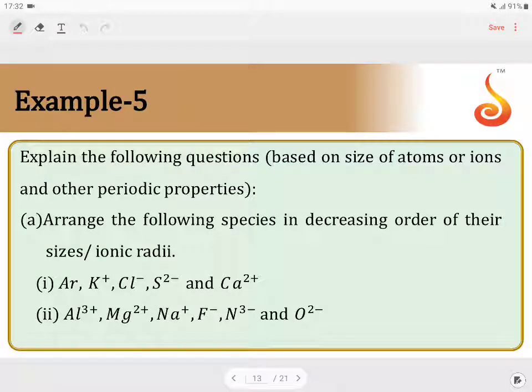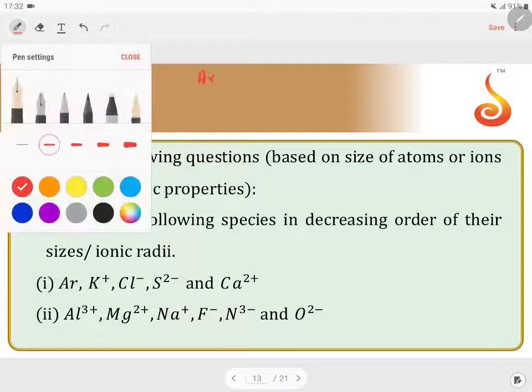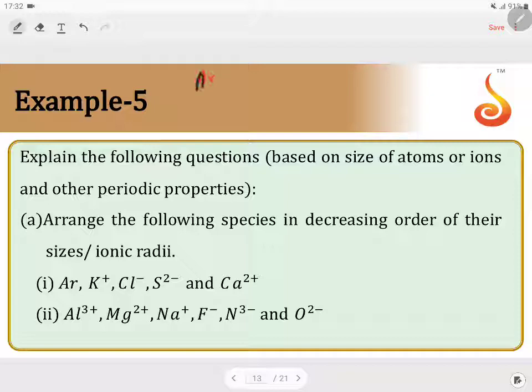Example number 5. Explain the following questions based on the size of atoms or ions and other properties. Now first question is, arrange the following species in the increasing order of their atomic size. What I will do is, I will write the element first. Whenever they ask question related to atomic radius, write the number of protons.